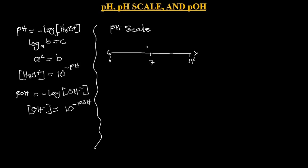When pH is at 7, we say that the solution is neutral. If the pH is lower than 7, going below 7, we say it is acidic. If it is going above 7, we say it is alkaline or basic. So that is the pH scale.